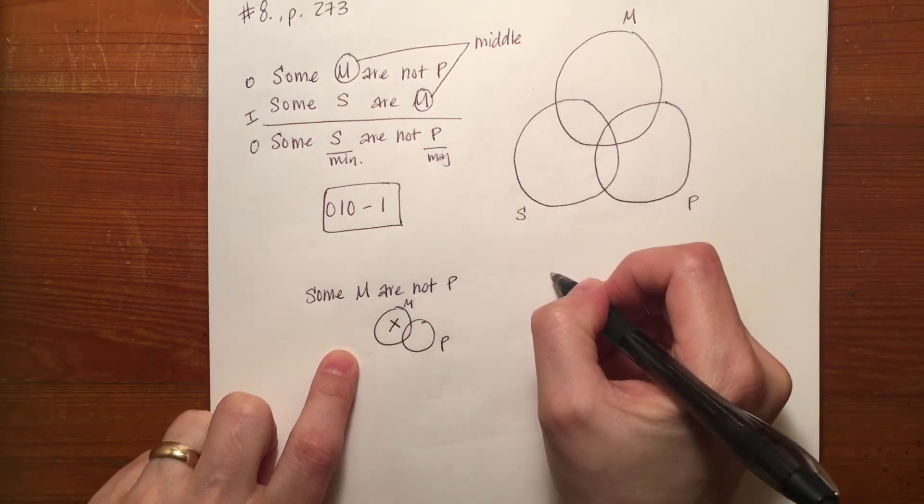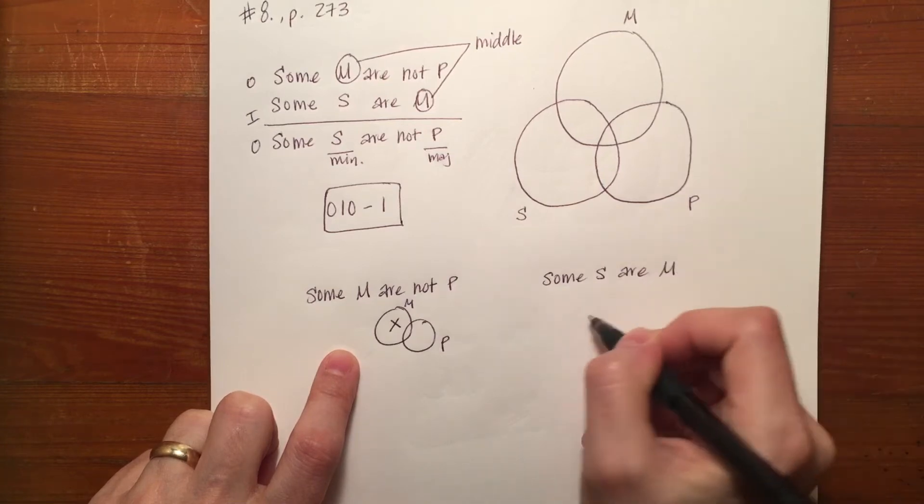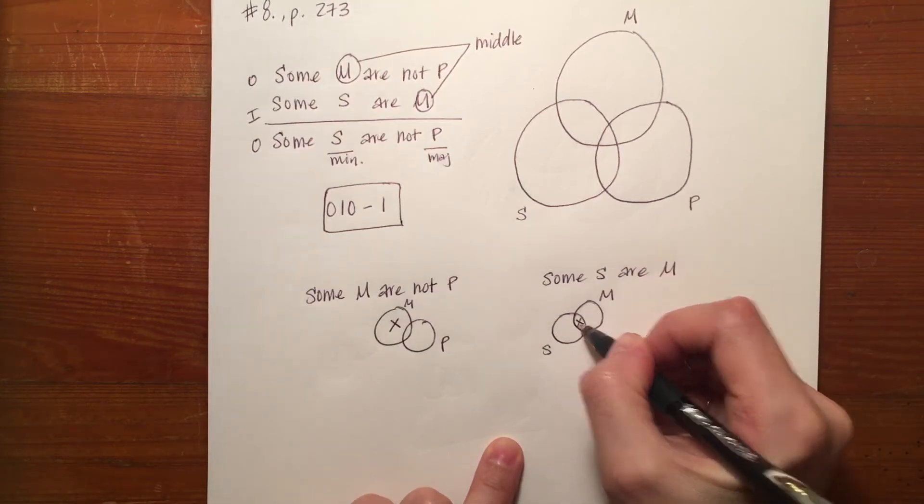If I wanted to look at the second premise, some S are M, my S circle is here, my M circle is here, some S are M, the X would go in the middle.